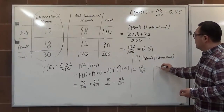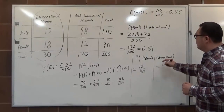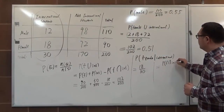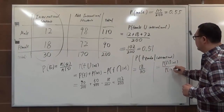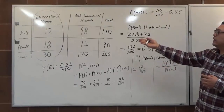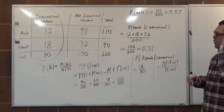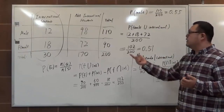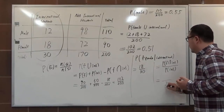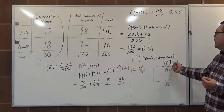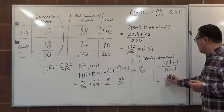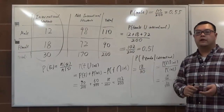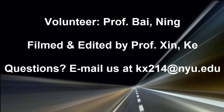Using the conditional probability formula: P(A given B) equals P(A intersection B) divided by P(B). The probability of international students is 30/200, and the intersection of female and international is 18/200. So we get (18/200) divided by (30/200), which simplifies to 18 over 30 — confirming the same result as the intuitive approach.